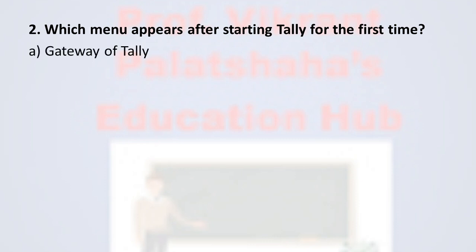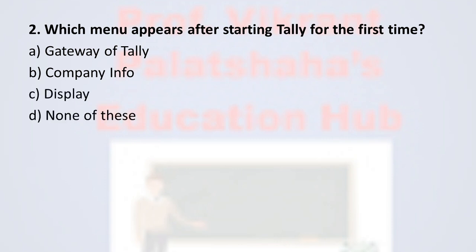Question number two: Which menu appears after starting Tally for the first time? Option A: Gateway of Tally, Option B: Company Info, Option C: Display, Option D: None of these. The correct option is Option B, Company Info. Whenever we open Tally for the first time, the menu that appears is called Company Info, therefore the correct option is Option B.